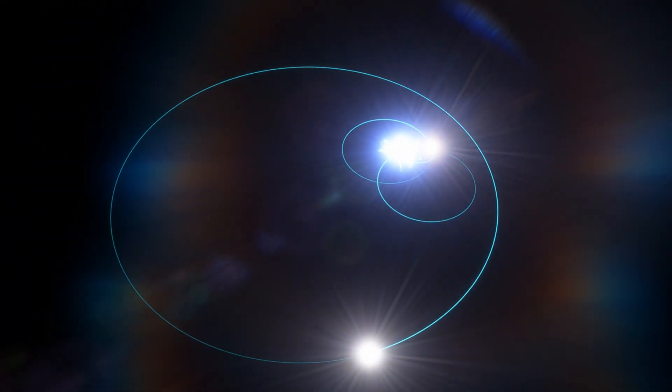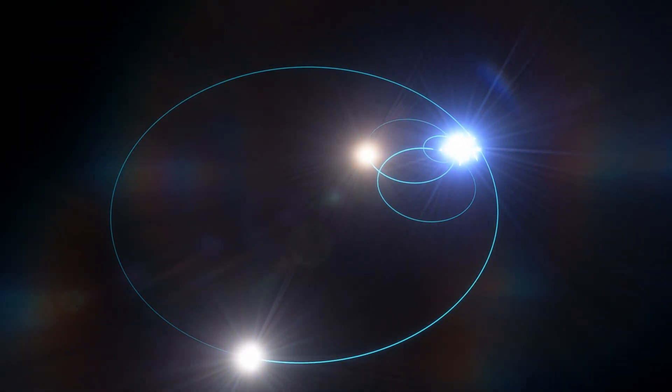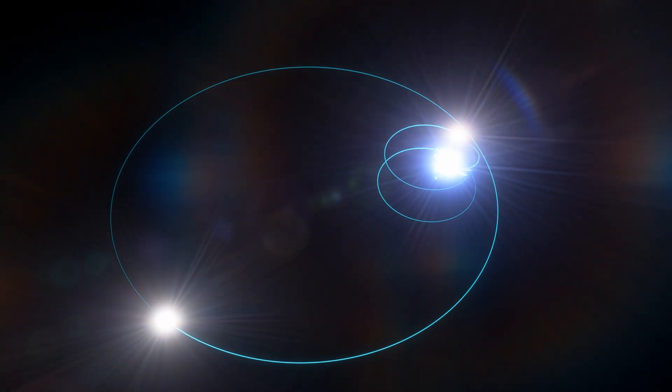As the outer binary spirals in, it breaks apart due to tidal forces from the primary. The lighter star spirals into an orbit with the helium star, leaving the heavier main sequence star of the now-destroyed outer binary on the larger orbit around the pair.